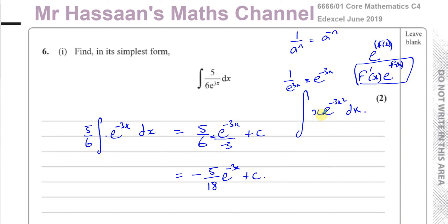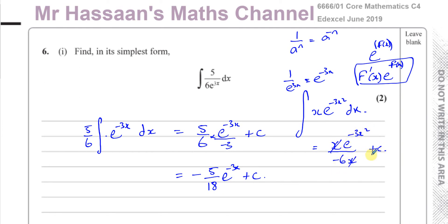To integrate something like x times e to the power of minus 3x squared, I'd write it as it is because e to the power of a function just stays the same — you keep the power as e to the power of minus 3x squared. Then divide by the differential of what's inside, which is minus 6x. The x term disappears, leaving minus 1 over 6 times e to the power of minus 3x squared plus c. That's just a different example showing how the reverse chain rule works.